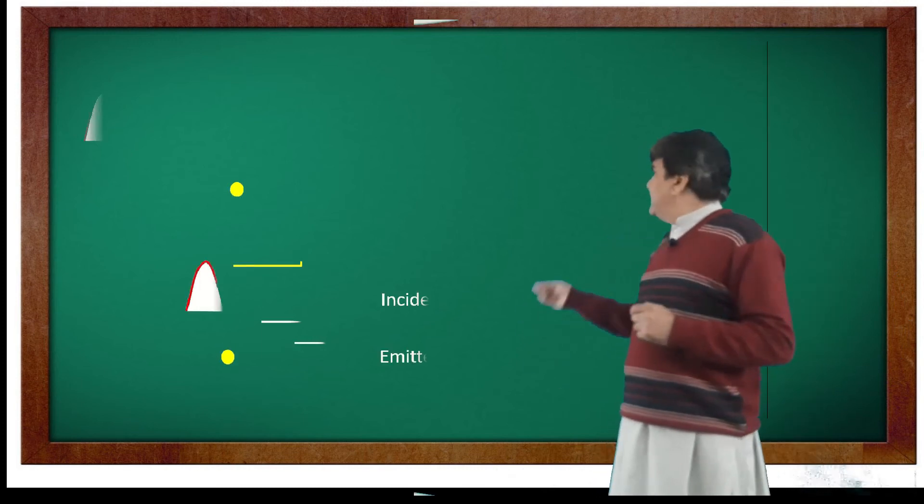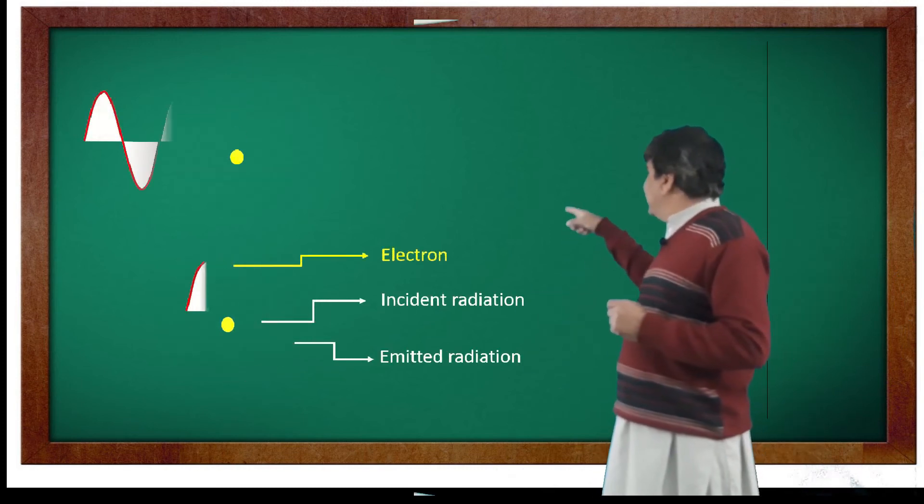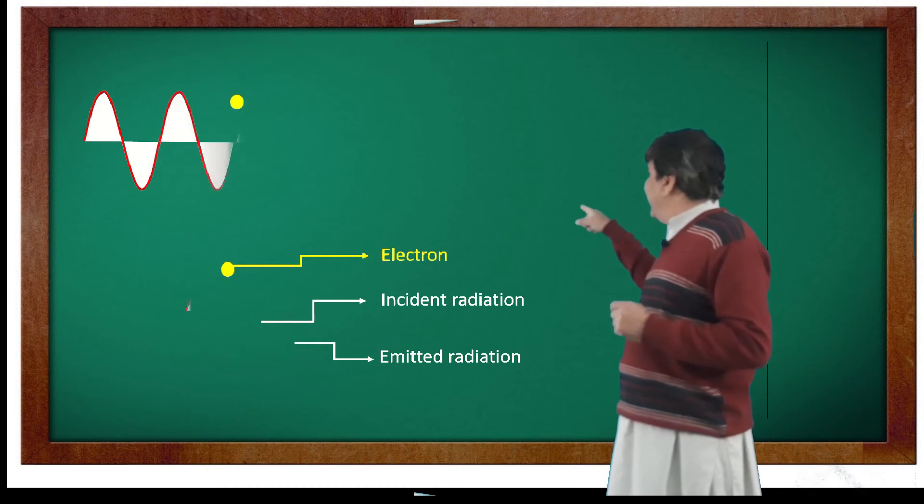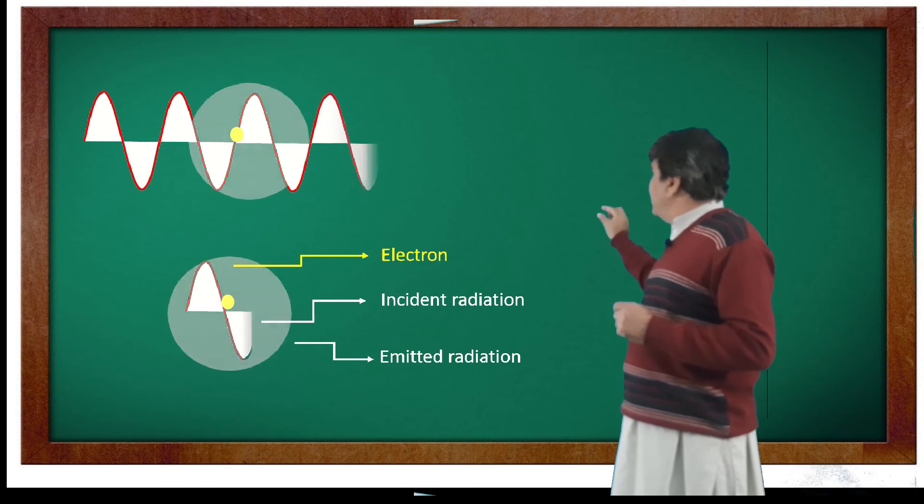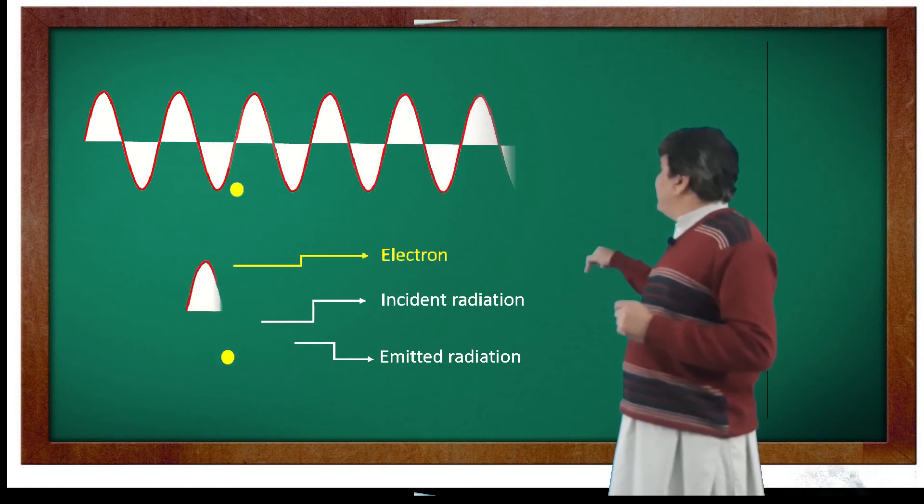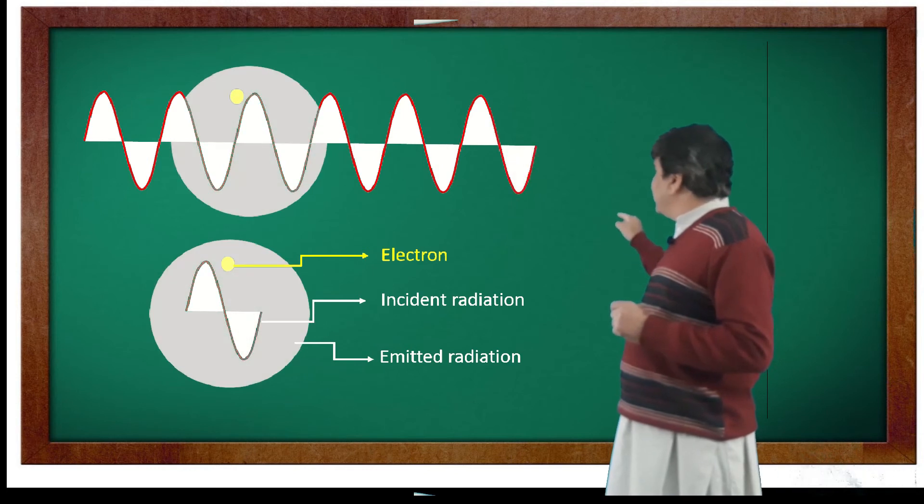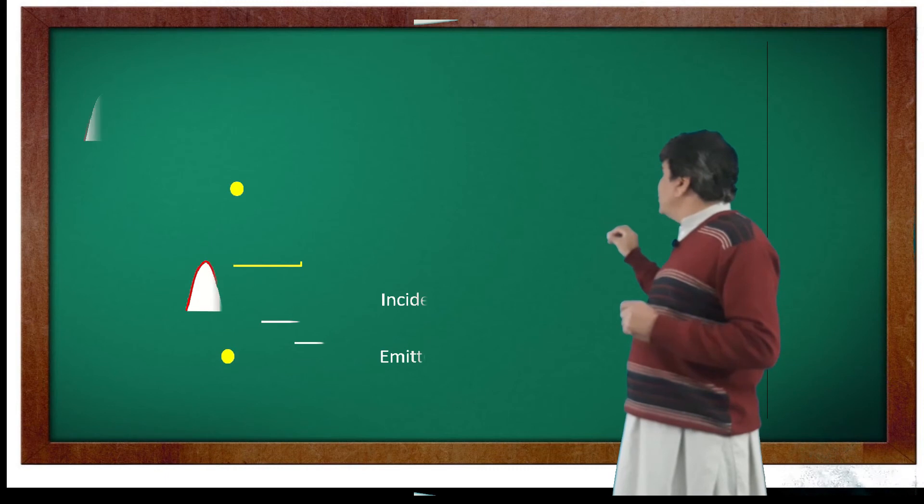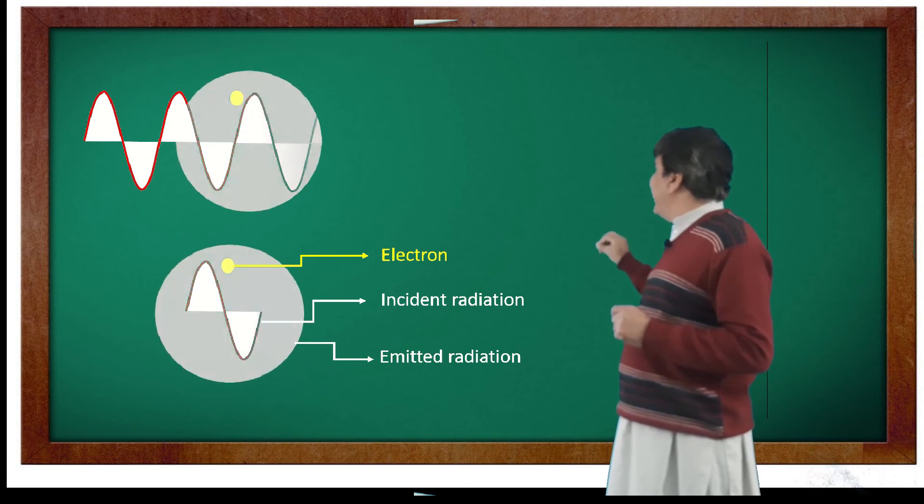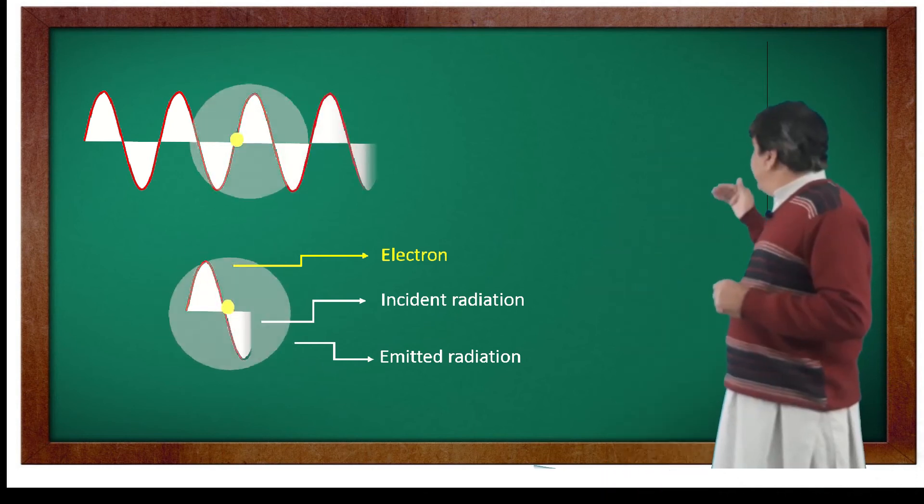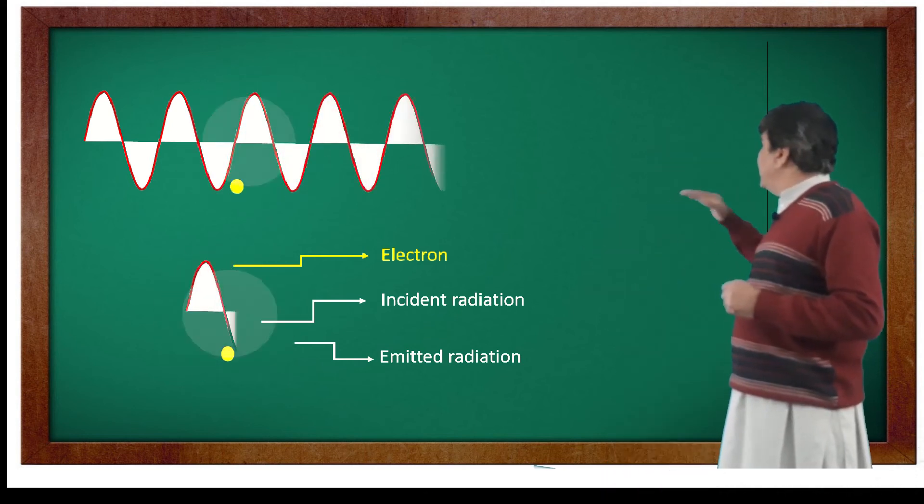This is visualized in the simulation where an incident electric field is hitting an electron which is denoted by a yellow disk. The electron oscillates with the frequency of incident field and along with that it also produces its own electric field of frequency equal to the frequency of incident radiation. And this is further visualized in the second simulation at the bottom.